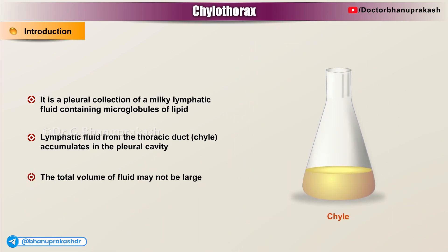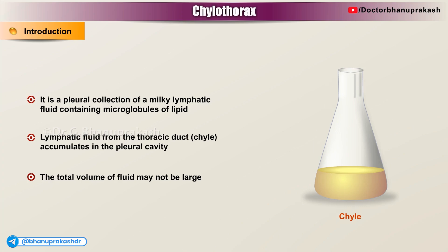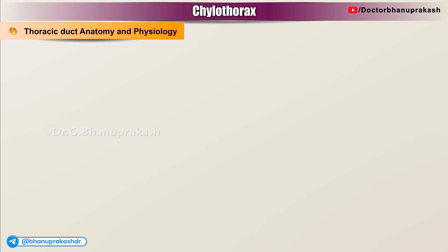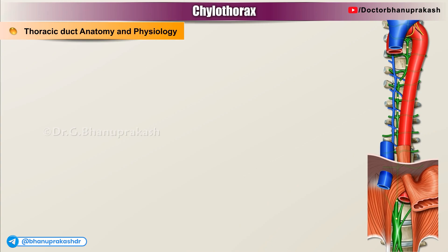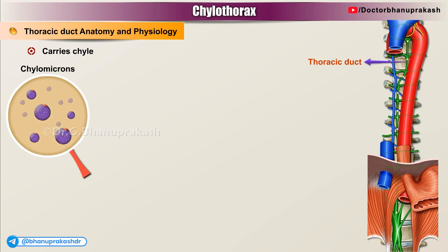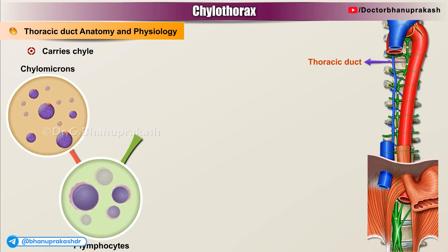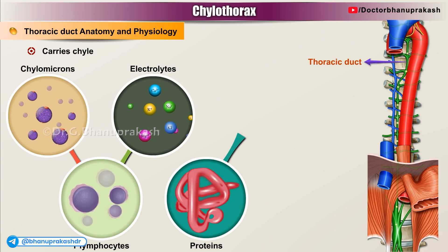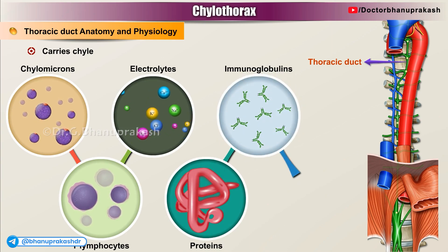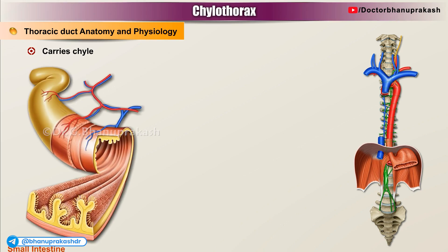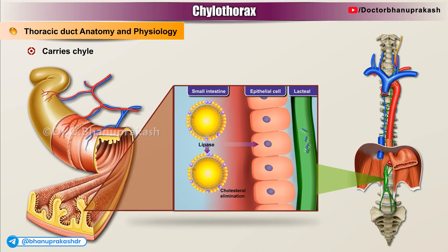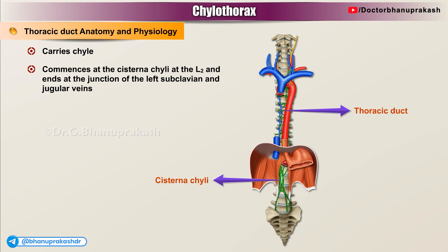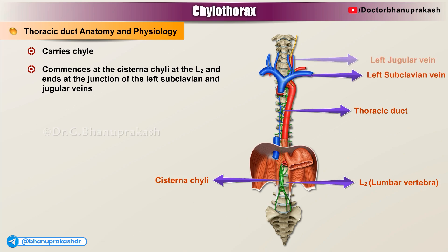The total volume of fluid may not be large. Thoracic duct anatomy and physiology: The thoracic duct carries chyle, which contains triglycerides in the form of chylomicrons, T lymphocytes, electrolytes, proteins, immunoglobulins, and fat-soluble vitamins from the intestine to the bloodstream. It commences at the cisterna chylae at the second lumbar vertebra and ends at the junction of the left subclavian and jugular veins.